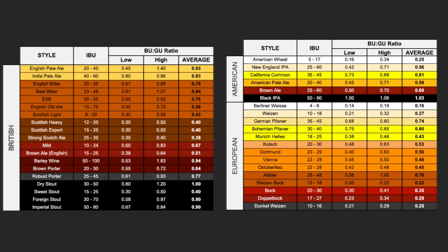Once you have good experience levels with this recipe template at this example recipe's BUGU range, then I would urge you to play with the alcohol and bitterness levels in your brewing software and try other levels. It has to be said though that when experimenting you will find less bitter and not so high alcohol levels easier to work with when brewing and testing, and of course cheaper to brew.